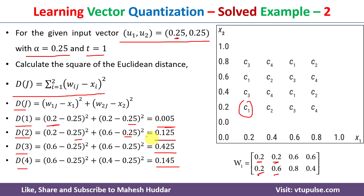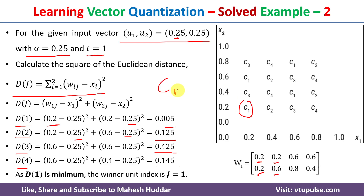Among these distances, d1 is the minimum. Hence c1 is the winner, and the input vector is assigned to class c1. Since the input actually belongs to class 1 and we have classified it into c1, this is a correct classification. We now need to update the weights with respect to class c1 — specifically the two weights in that column: w11 and w21.